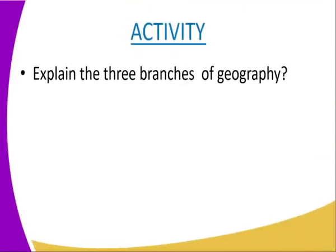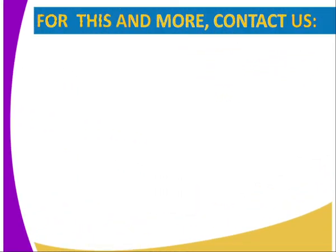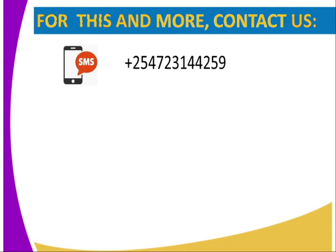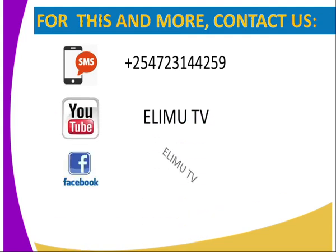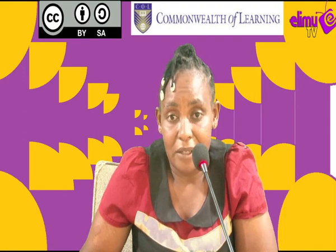The activity for today's lesson: explain the three branches of geography. The reference book is KLB 2003 Secondary Geography Student Book One, third edition. For more information, you can contact us through the details provided. You can SMS, or reach us through YouTube, Facebook and Twitter. Stay tuned. Thank you. Bye.